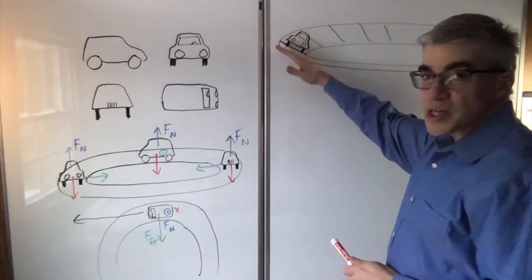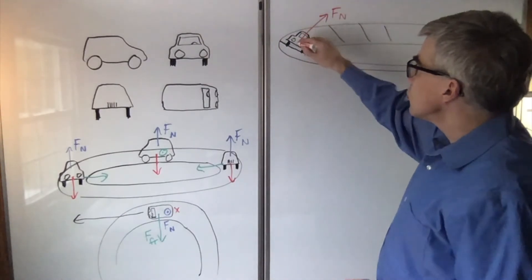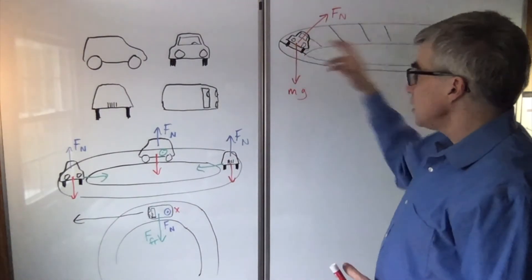If a car is on a tilted road, then the normal force means normal, perpendicular to the surface. Gravity is straight down. And if you go at just the right speed, it will go in a circle.